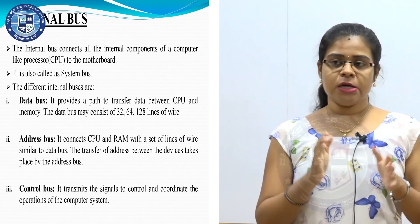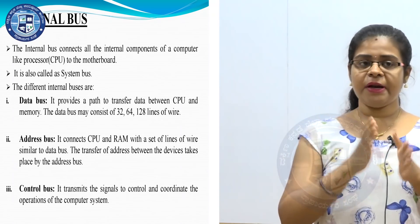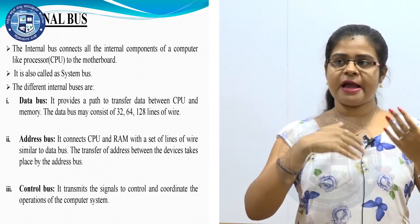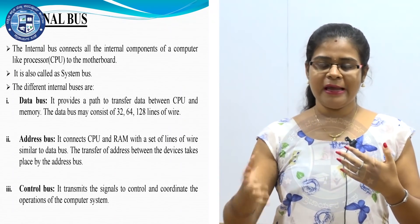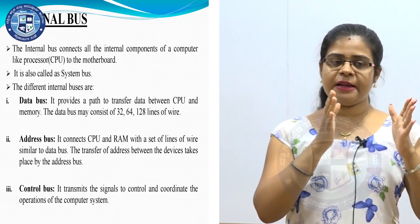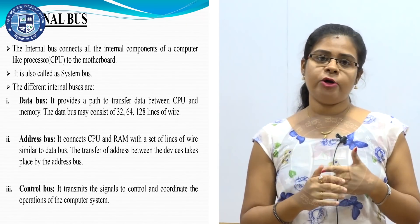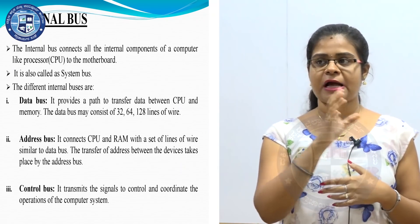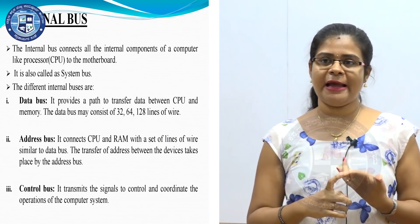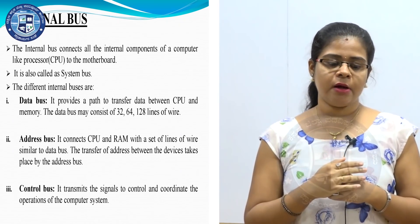The first type is the data bus. The data bus provides a path to transfer data between the CPU and memory. Whatever data has been processed in the CPU gets transferred to memory through the data bus. The data bus consists of 32, 64, or 128 lines of wires.